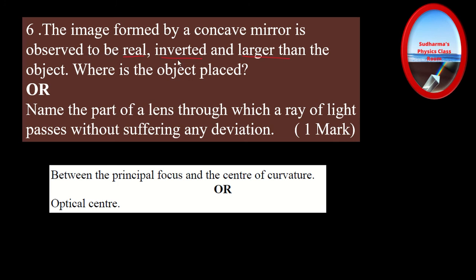For a concave mirror forming a real, inverted, magnified image, the object is between the center of curvature C and the focus F — the image is formed beyond C and it is a real magnified image. The other choice asks: name the part of a lens through which a ray of light passes without any deviation — that is the optical center. Write any one answer only, since it is a choice question. Never write both, as you will get only one mark and you waste time.